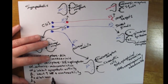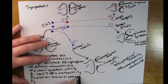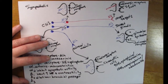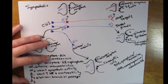Beta-2 adrenergic receptors are best known for causing dilation of the bronchioles — the tubes that lead to the lungs and allow the passage of air. Beta-2 adrenergic receptors are the target of drug classes for people who suffer from asthma, where they may have blockages of the bronchioles. Therefore, treatment would be an agonist for beta-2 adrenergic receptors to open up those bronchial passages. Beta-2 receptors are also found in the liver, pancreas, and uterus.